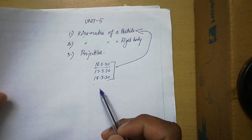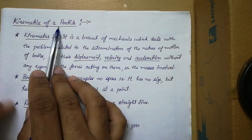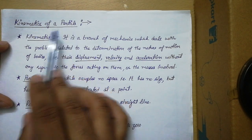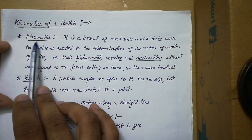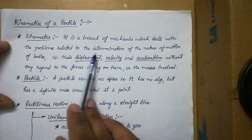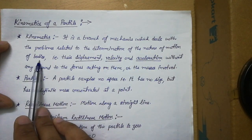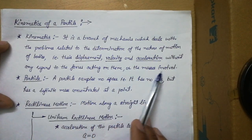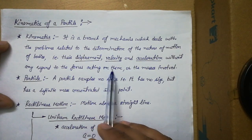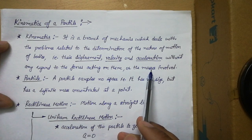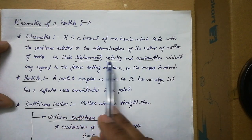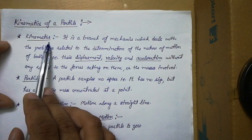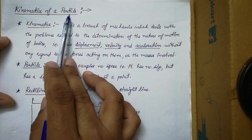This video is so that if you have any confusion while solving these problems, that should get clear. If we talk about kinematics of a particle, there are two words: kinematics and particle. If you can recall, at the start of the semester we talked about kinematics — it is a branch of mechanics which deals with problems related to determination of the nature of motion of bodies, that is their displacement, velocity, and acceleration, without any regard to the forces acting on them or the masses involved.